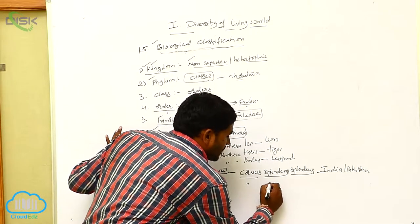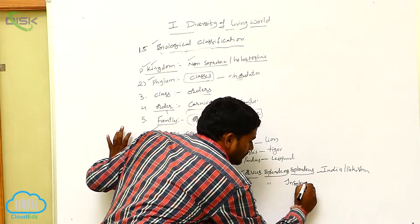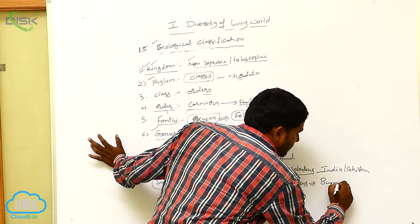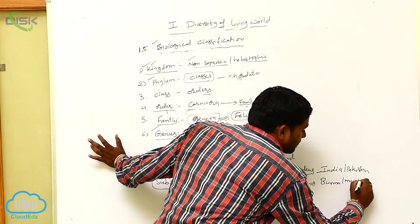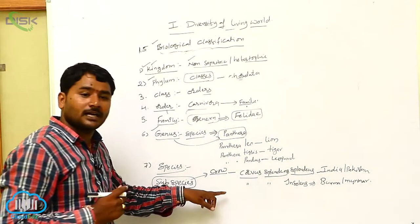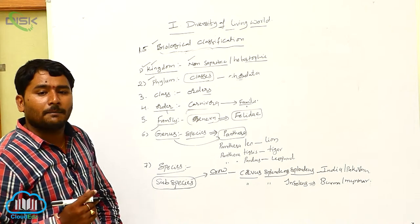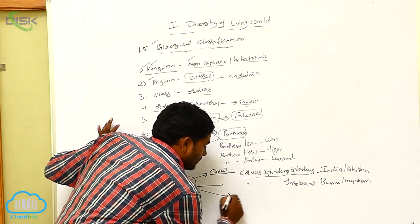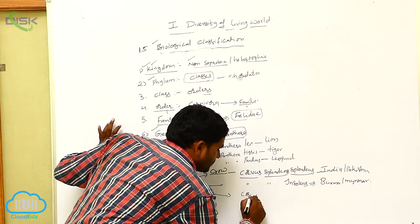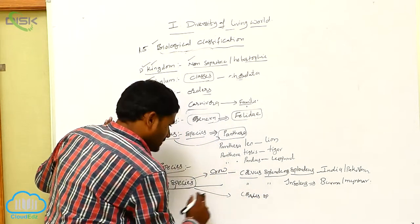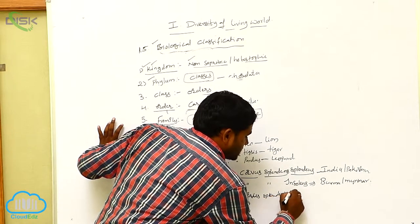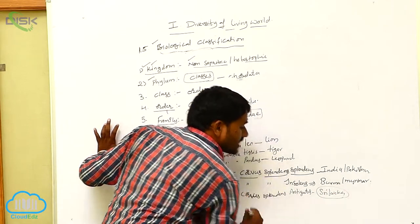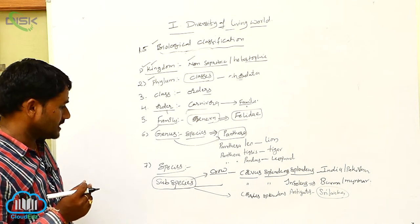Next is Corvus splendens insolens, which lives in Burma or Myanmar. And one more subspecies is Corvus splendens protegatus, which lives in Sri Lanka — that is the Sri Lankan subspecies.